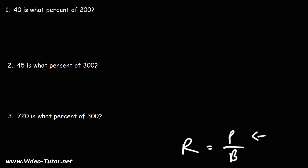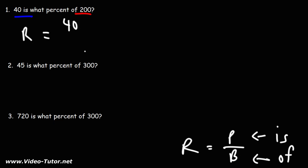So remember: the part is the number associated with the word 'is,' and the base is the number associated with the word 'of.' For number one — 40 is what percent of 200 — 40 is associated with the word 'is,' so that's going to be the part. 200 is associated with the word 'of,' so that's going to be the base.